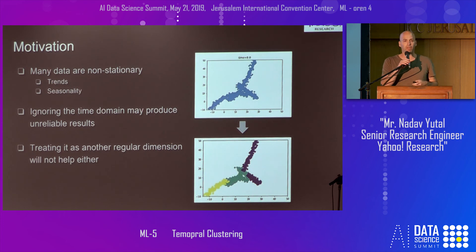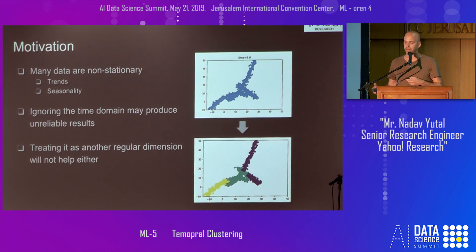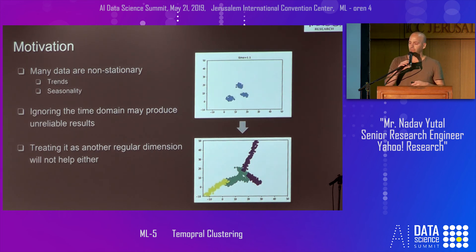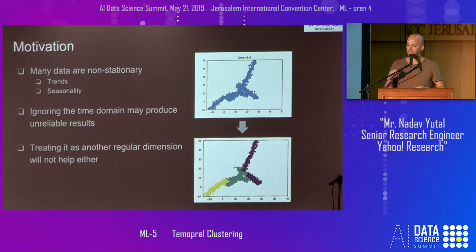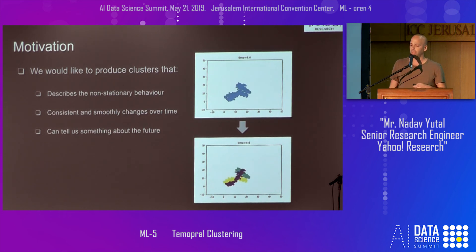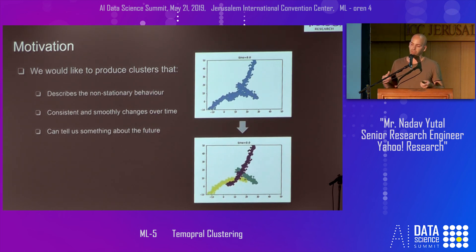But treating the time dimension as a regular dimension will not help either. If we just change the n-dimensional data to n-plus-one dimensions and apply a clustering algorithm, we might get the cluster we see below. And if you look carefully, you can see that the purple cluster contains objects originated only from the early period — and this is not the desired result. What we really want is clusters that describe the non-stationary behavior of the data, consistent over all the period and smoothly changed. Also, if you look carefully at the data, we can predict where the cluster is going to be at the next timestamp.